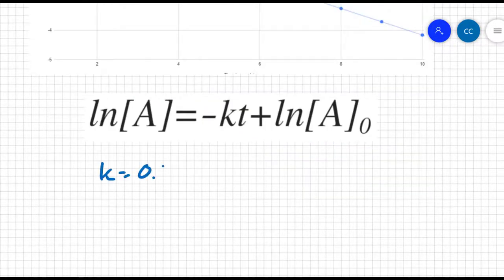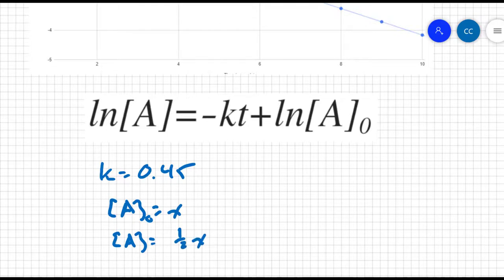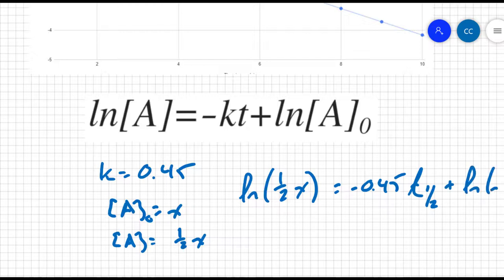If K equals 0.45, we want to find the half life. By definition, the half life means that my final amount is going to equal half of my initial amount. So if I say my initial amount is x, my final amount is going to be one half of x. So I can plug all of this information into my integrated rate law. I could say the natural log of one half x equals negative 0.45 times the half life plus the natural log of x.